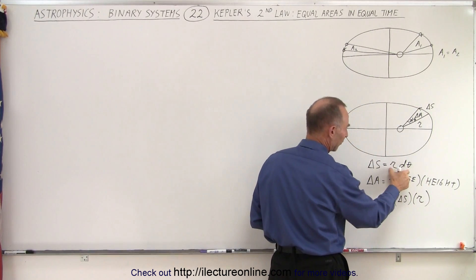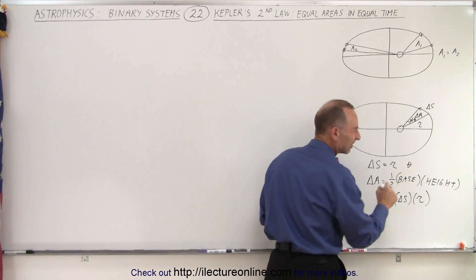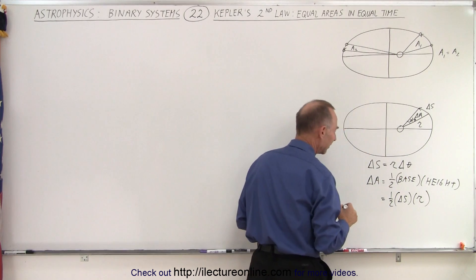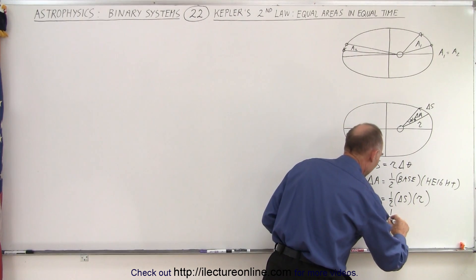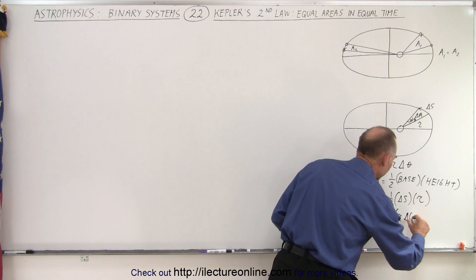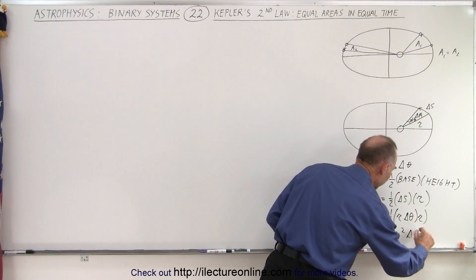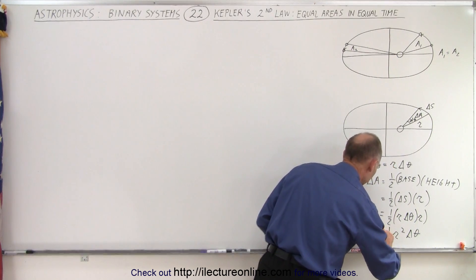Now of course delta S was defined here as R delta theta. So that's probably better like that. So then we have, this is equal to one half times delta S would be R delta theta times R, or that would be equal to one half R squared delta theta, and so that would be delta A.